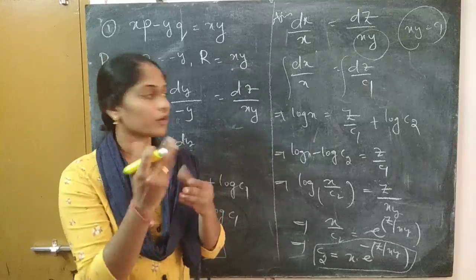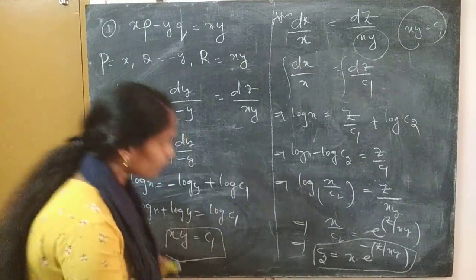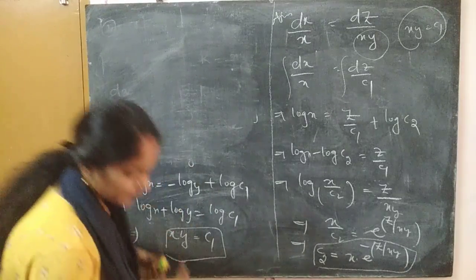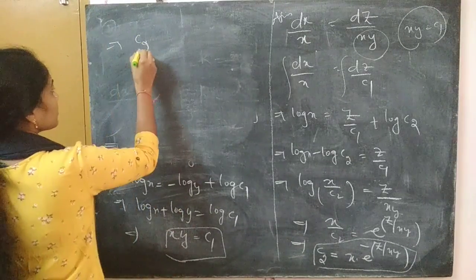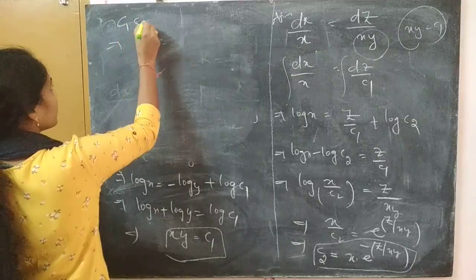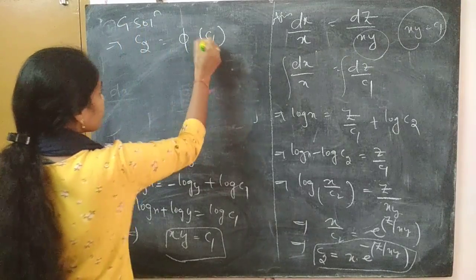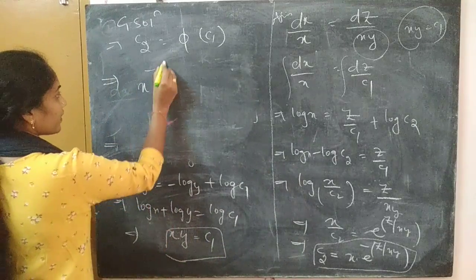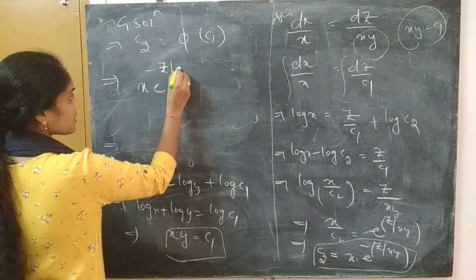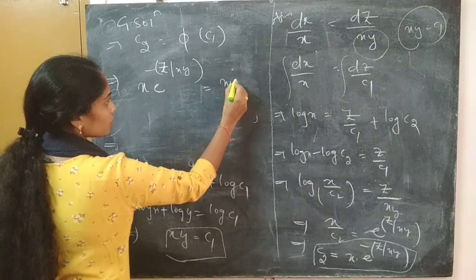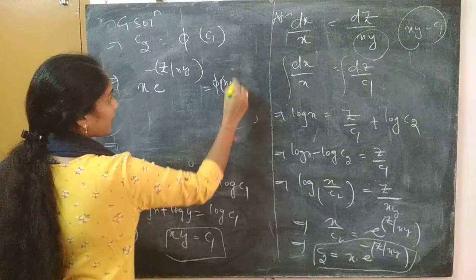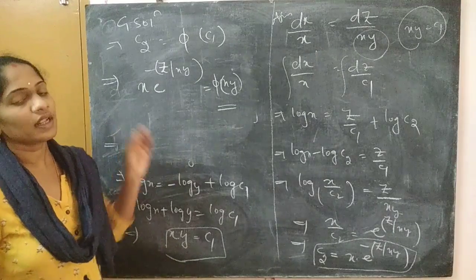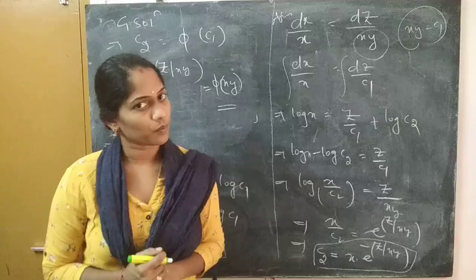This is the value of c2, and c1 equals xy is the first solution. The general solution is written as c2 equals phi of c1. So: x times e power minus(z/xy) equals phi(xy) is our required general solution of the given PDE. This is the first problem. Let us see the second problem.